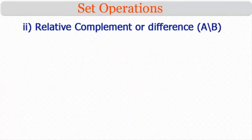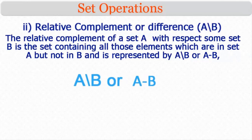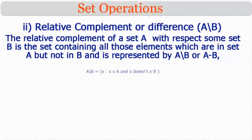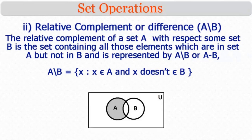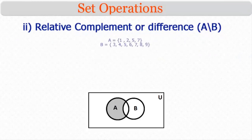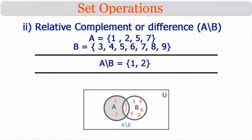The second kind of complement is the relative complement or difference. The relative complement of set A with respect to set B is the set of all elements in A but not in B, represented as A − B. That is, A − B = {x : x ∈ A and x ∉ B}. In the Venn diagram, the shaded portion represents A − B. For example, if A = {1, 2, 5, 7} and B = {3, 4, 5, 6, 7, 8, 9}, then A − B = {1, 2}.